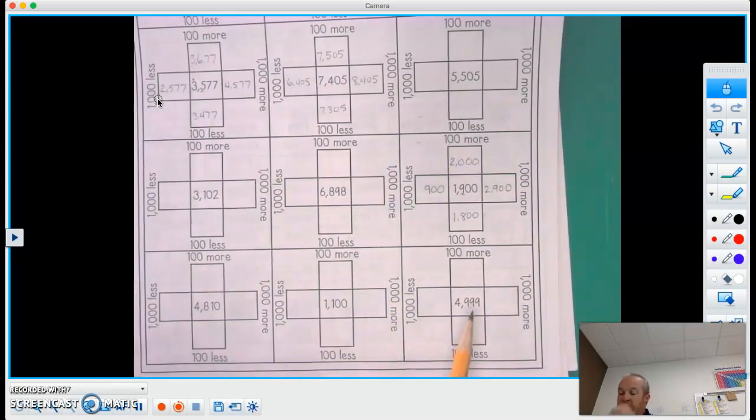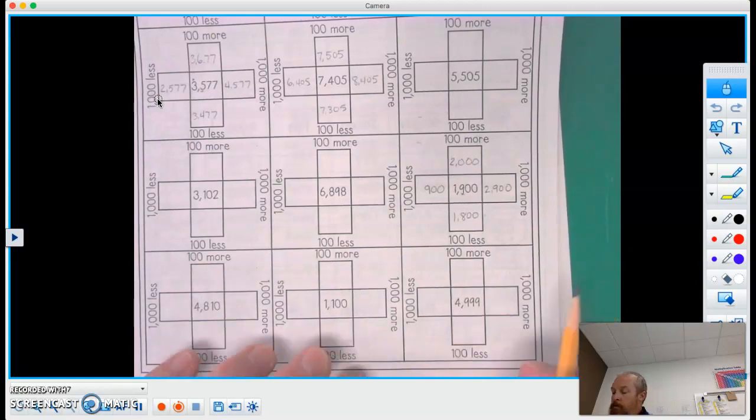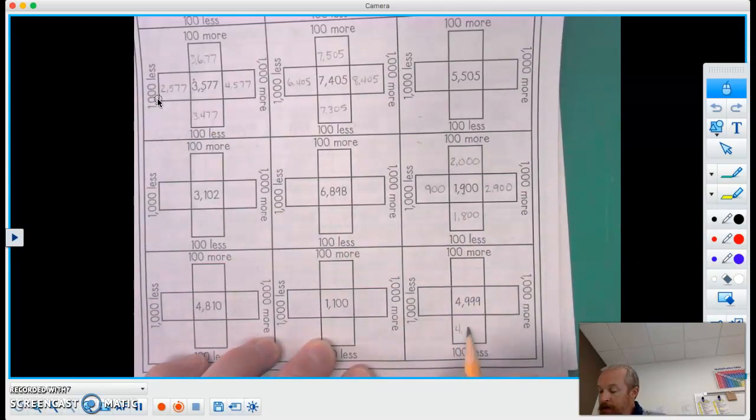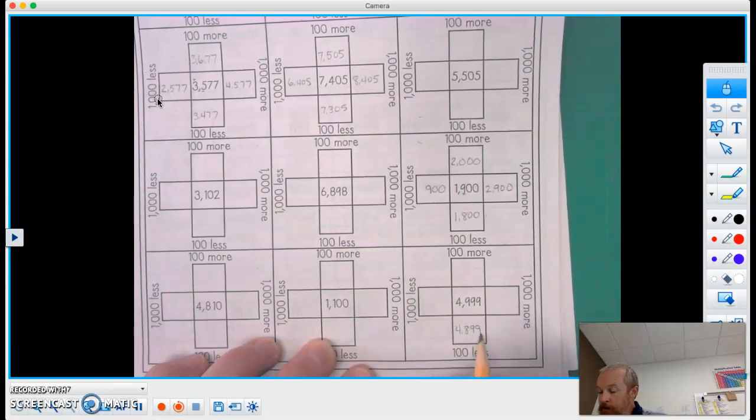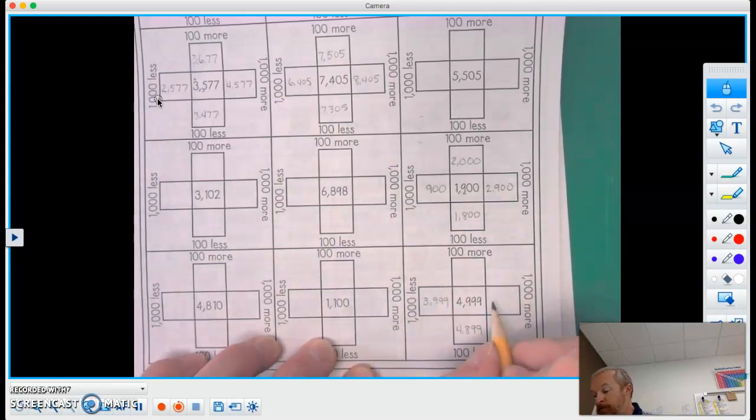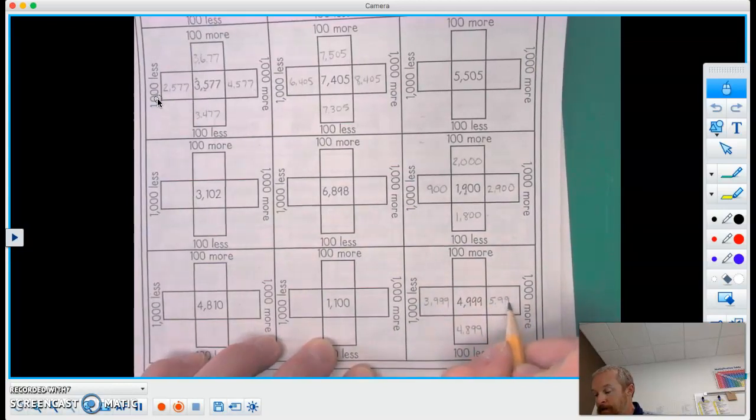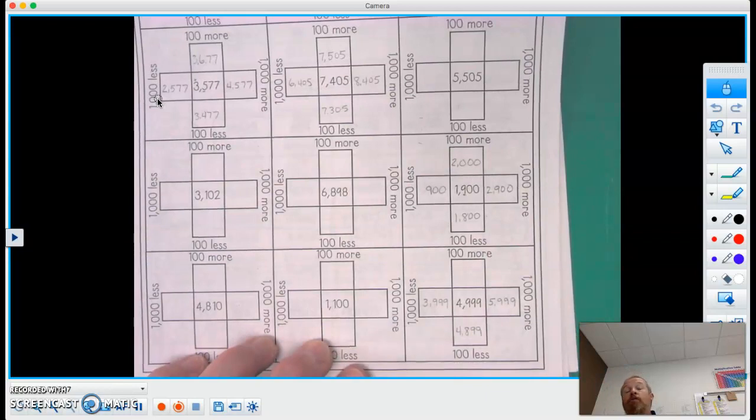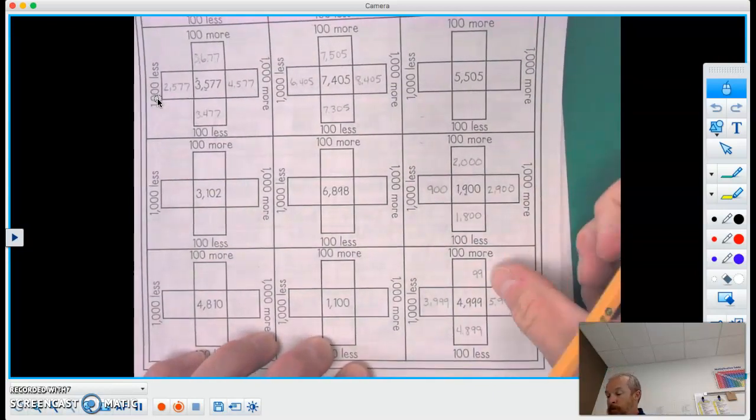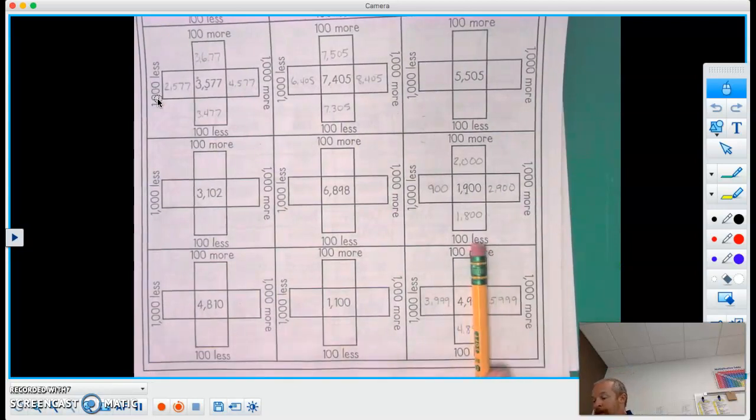And then let's do this one together again as well. 100 less than that would be 4,899. 1,000 less, 3,999. 1,000 more would be 5,999. 100 more, well, it's going to end at 99. So if I cover that up, we have 49.